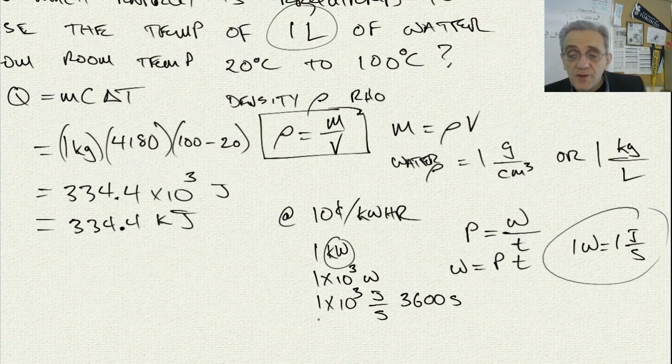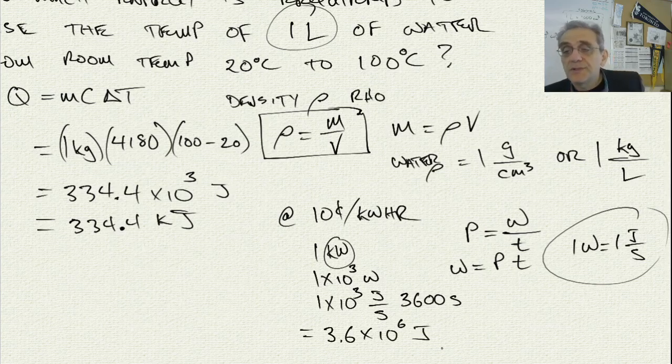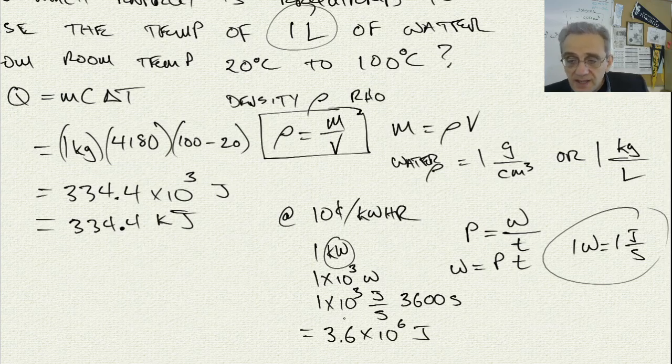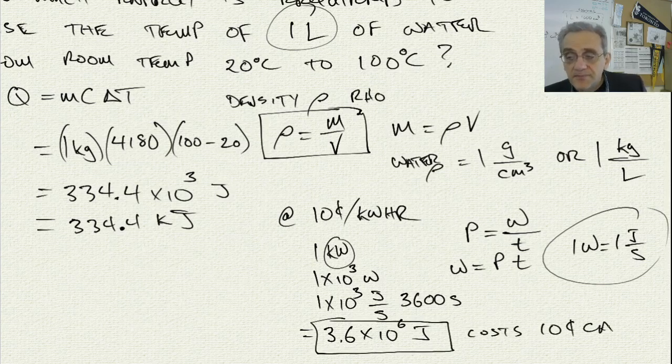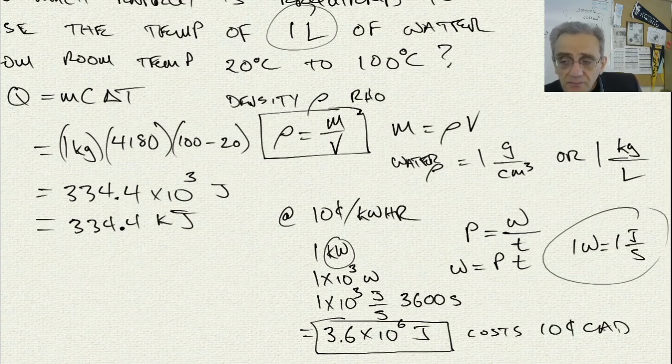Now an hour has 60 times 60, 60 minutes times 60 seconds is 3,600 seconds. So if we multiply 1,000 times 3,600 seconds, we get 3.6 times 10 to the power of 6, and that's in joules. 3.6 times 10 to the power of 6 joules. Now that means this much energy, electric energy, costs 10 cents Canadian.